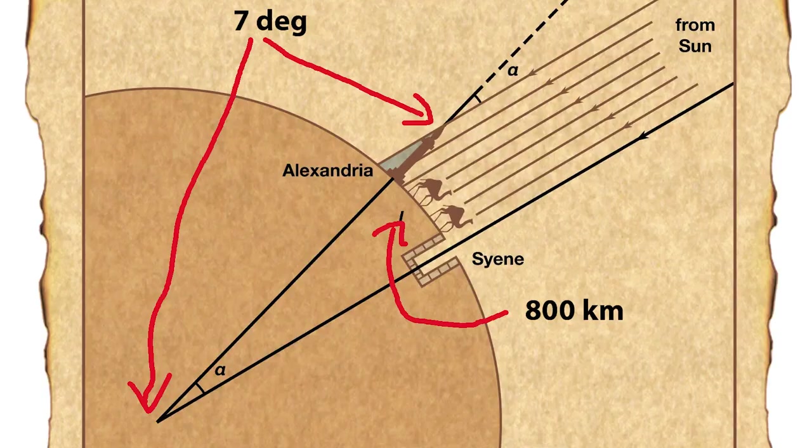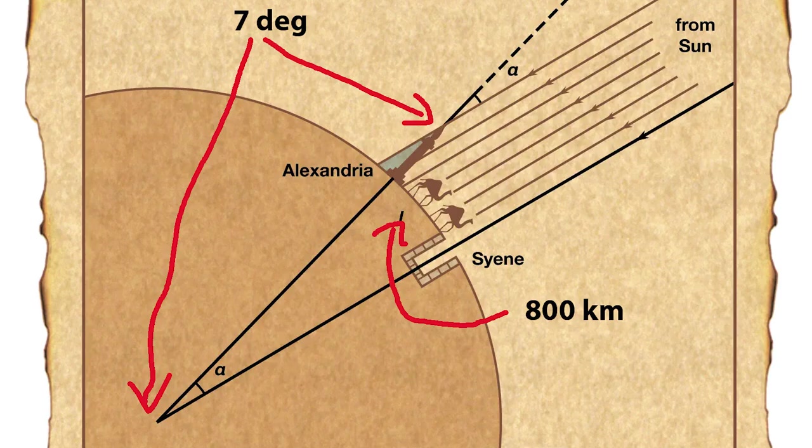After he got all the data, he made a model, something like this, and he put in all the numbers to visualize how this could work. By using basic geometry and basic arithmetic, he figured out the size of the Earth.